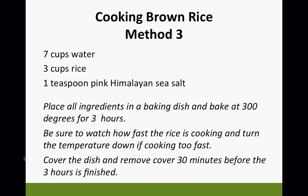Here's a baking method: seven cups of water, three cups of rice, one teaspoon of pink Himalayan sea salt. Put all ingredients in a baking dish and bake at 300 degrees for three hours. Watch how fast the rice is cooking and turn the temperature down if it's cooking too fast. Cover the dish and remove the cover 30 minutes before the three hours is finished. You have to know your oven — some ovens are extremely fast, some medium, some slow.